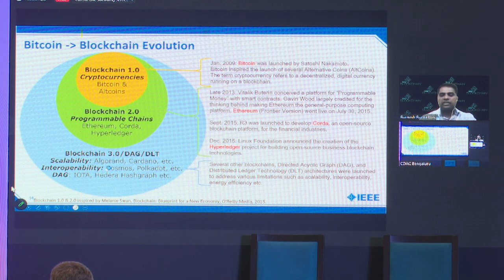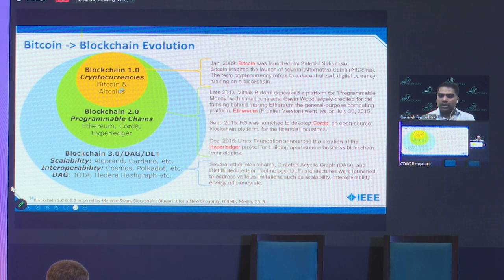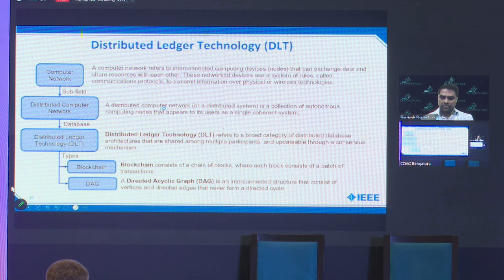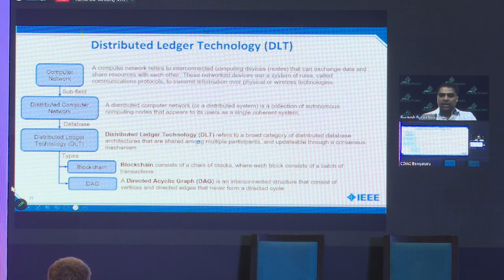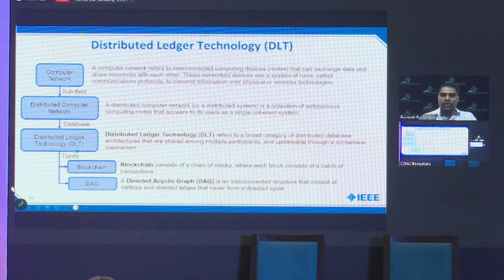Blockchain 3.0 saw multiple architectures created to address the limitations of Blockchain 2.0. DLT stands for Distributed Ledger Technology — blockchain and DAGs (Directed Acyclic Graphs) are data structures that are subtypes of DLT.